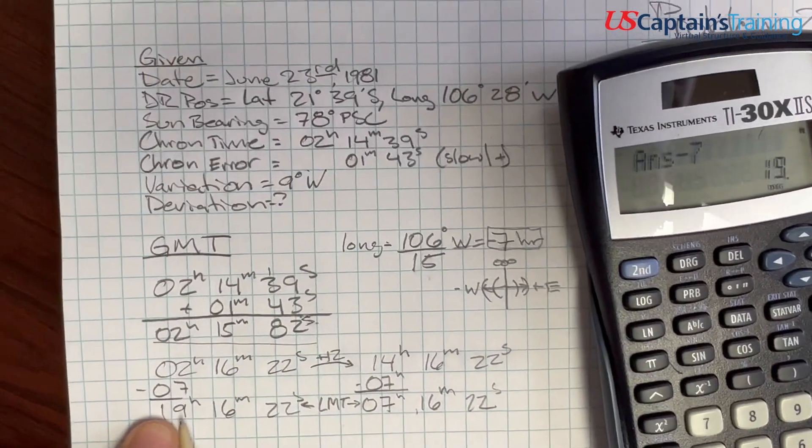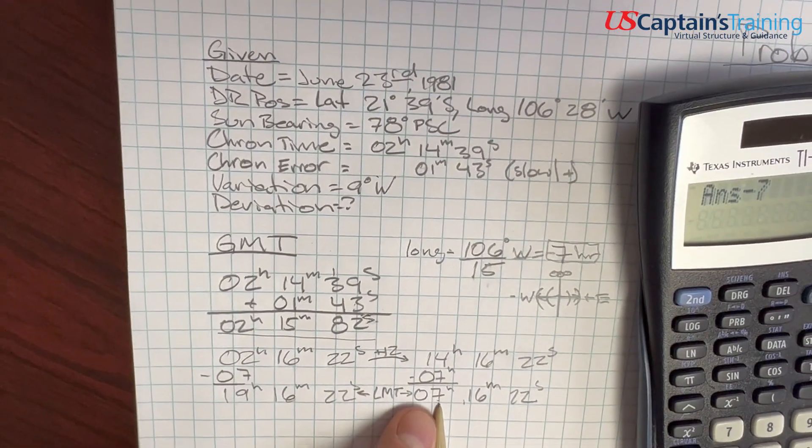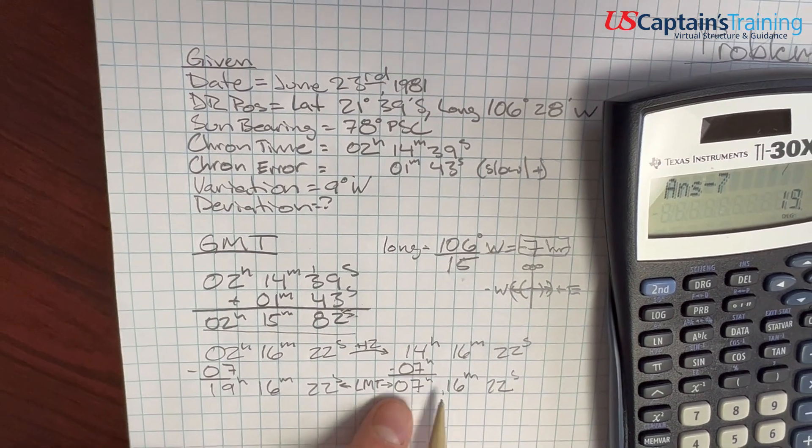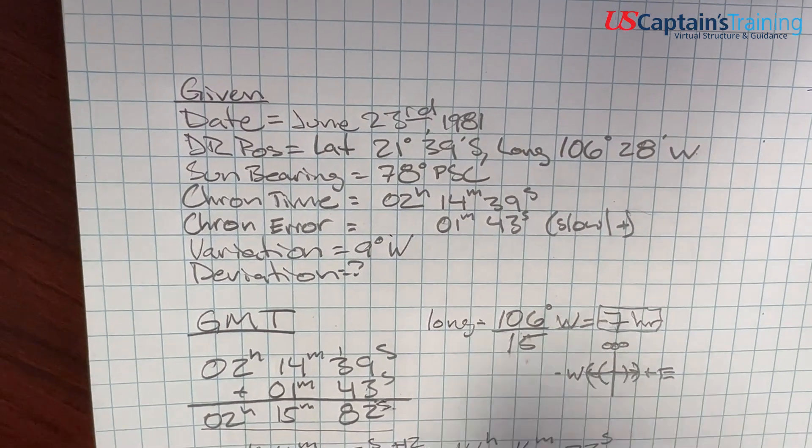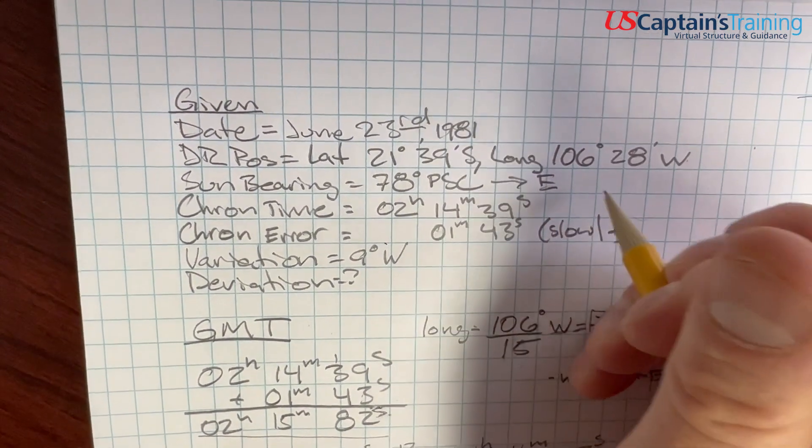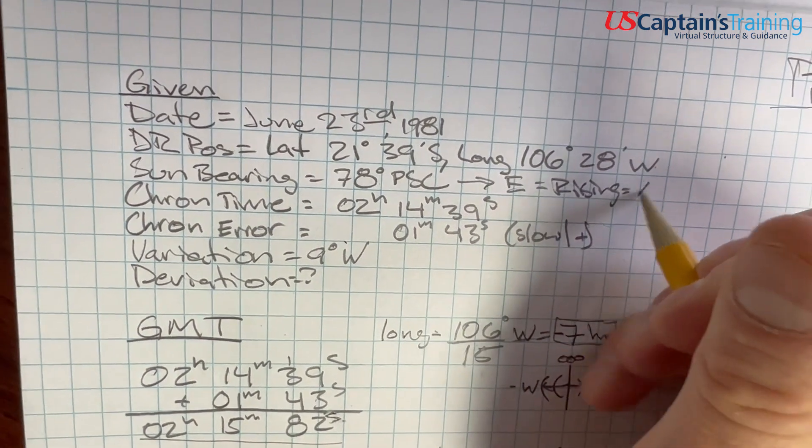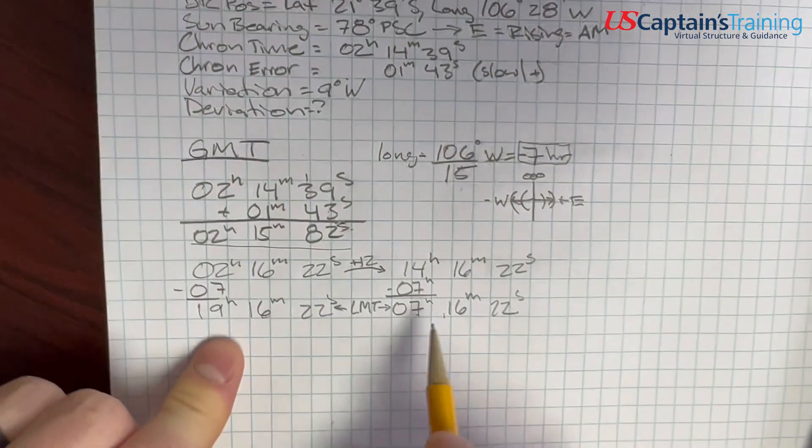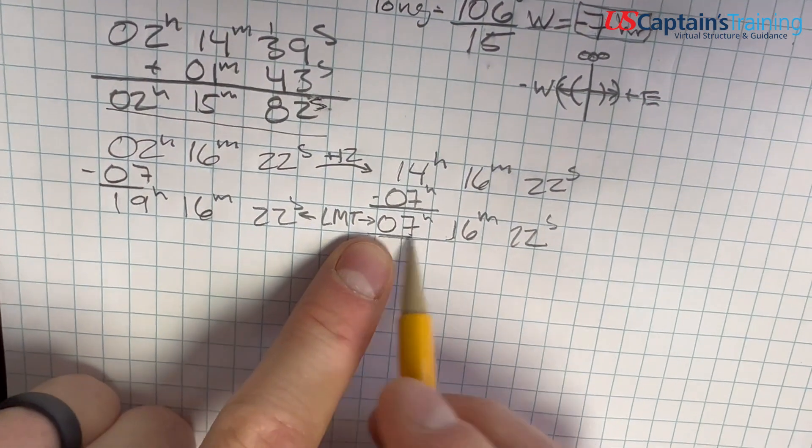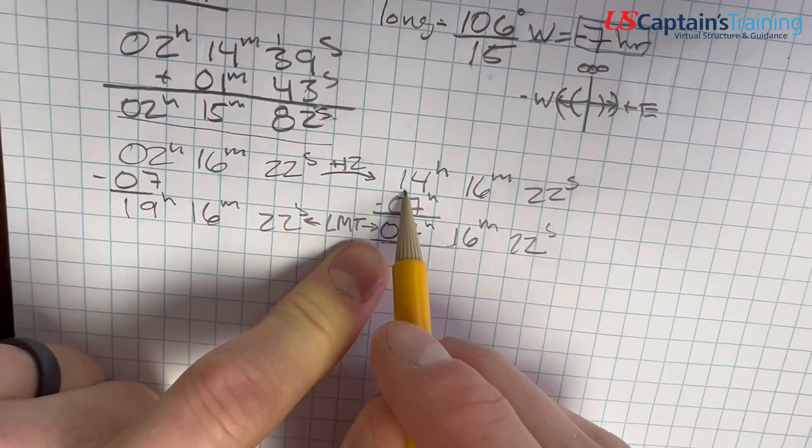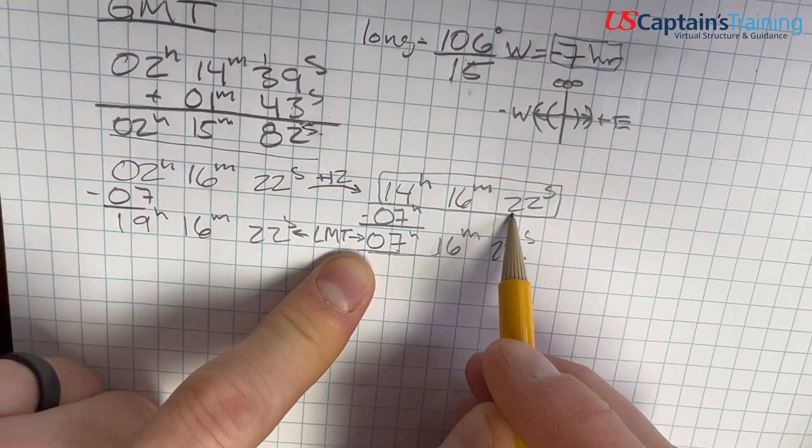19 hours, that's going to be night, that's PM. That would be a setting sun. Seven hours is in the morning, that's AM, that'd be a rising sun. What are we looking at? We saw the sun bearing 78, which means that is in the east, which means it was rising. So we were in the AM. Which one of these local mean times is AM? This one. This is 7 AM. So we need to work backwards and say, okay, this was our GMT: 14h 16m 22s.